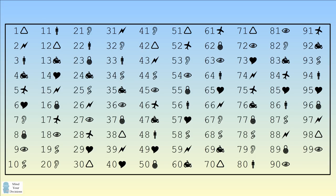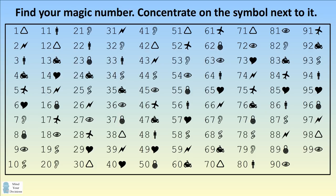In the following table, locate your magic number and concentrate on the symbol next to your number. If you have the number four, for example, I want you to concentrate on the symbol of the person on the motorcycle.